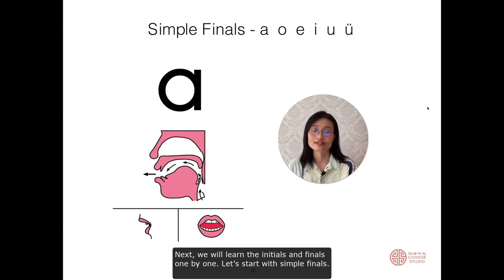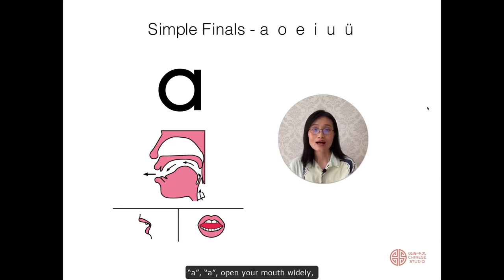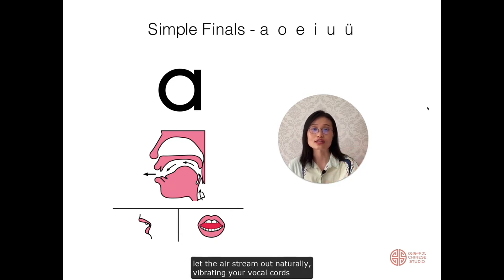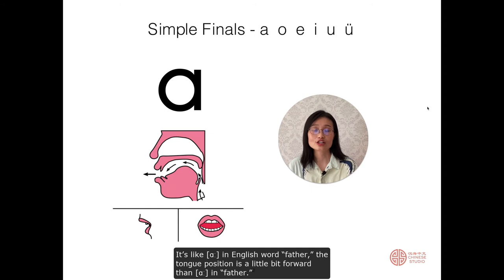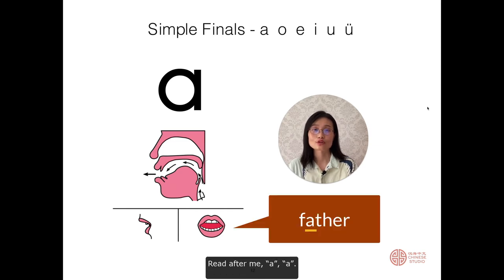A, ā. Open your mouth widely. Put the tongue in the lowest position. Let the air stream out naturally, vibrating your vocal cords. It's like 'a' in the English word 'father', but the tongue position is a little bit higher. Read after me: ā, á, ǎ.